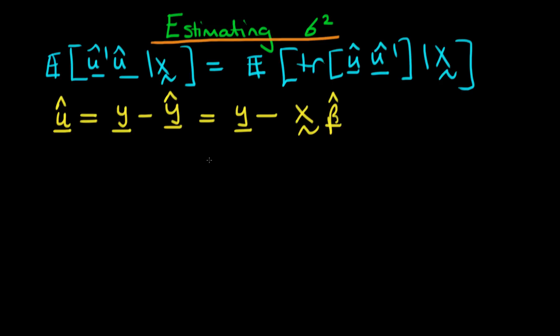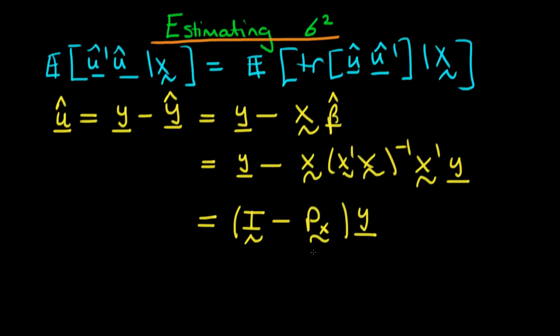If we substitute in the explicit form for beta hat, we have this equals y minus x times the quantity x primed x to the power minus 1 times x prime times y, which we can write as the quantity I minus this whole second expression before the y, which is Px our orthogonal projection matrix, all times y.